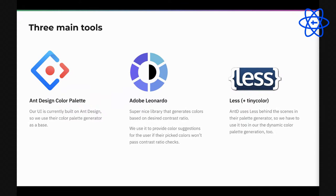We built our own solution at Brella using these main tools: our component library is built on Ant Design, so we use Ant Design's own color palette generator as a base. To improve UX on the customization tab for event organizers, I found Adobe's Leonardo library which does accessibility contrast ratio checks and suggests usable colors. We also use Less — since Ant Design uses Less — to override variables at runtime, and TinyColor to adjust a few colors that don't exist in the generated palette.